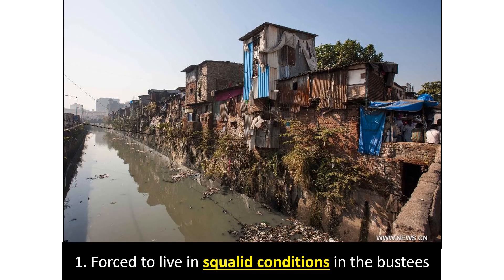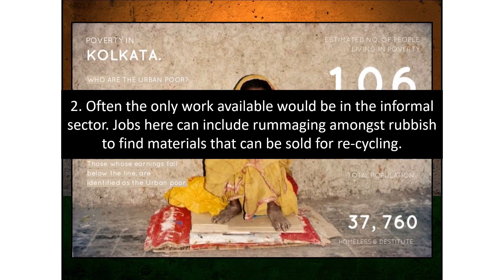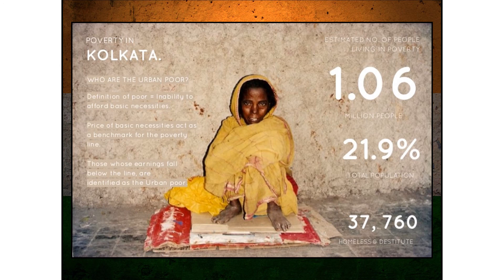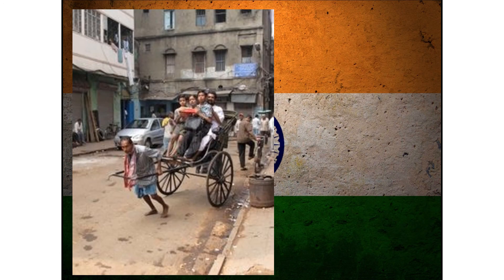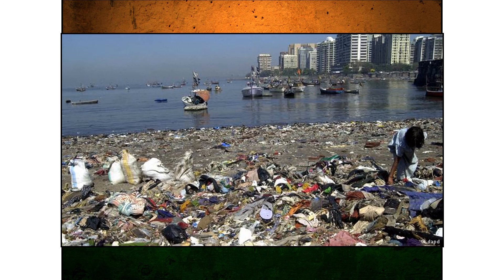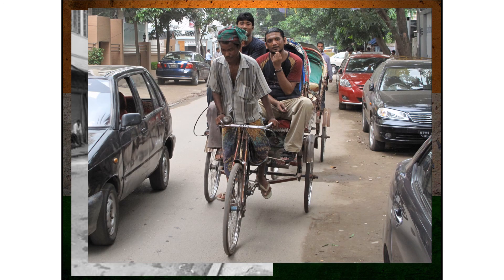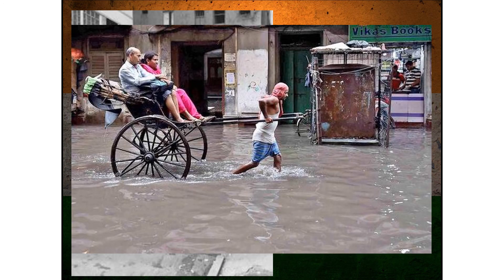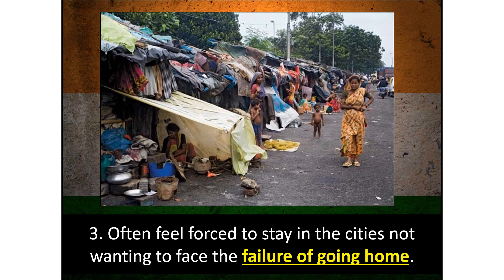Consequences for the migrant. Many of these rural-to-urban migrants arrive without skills and without work, forcing them to live in slums or busties. Often the only work available is in the informal sector — jobs that can include rummaging through rubbish to find materials that could be sold for recycling. Many migrants feel forced to stay in the cities, not wanting to face the failure of going home.